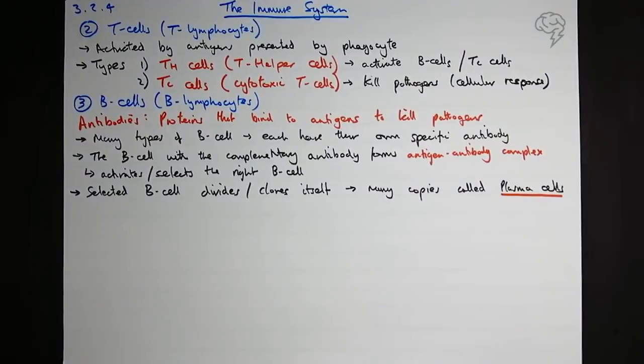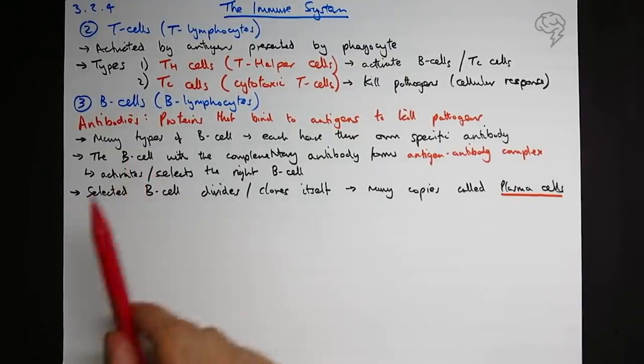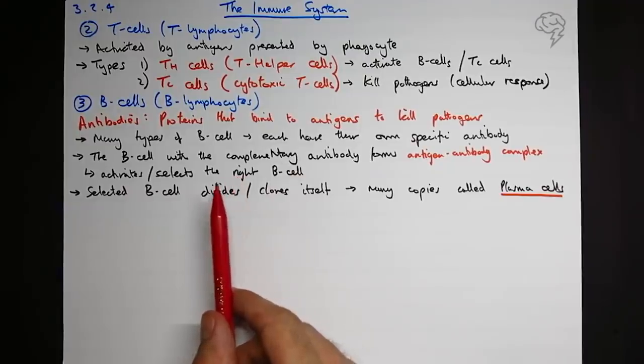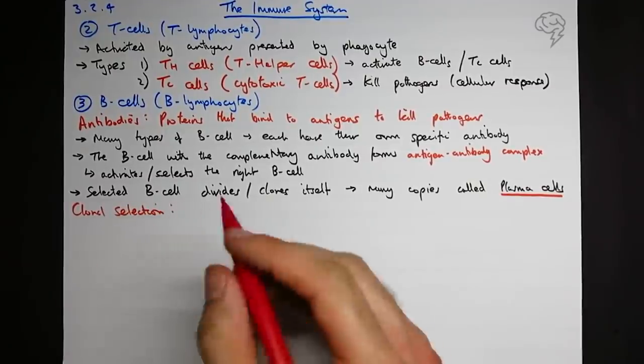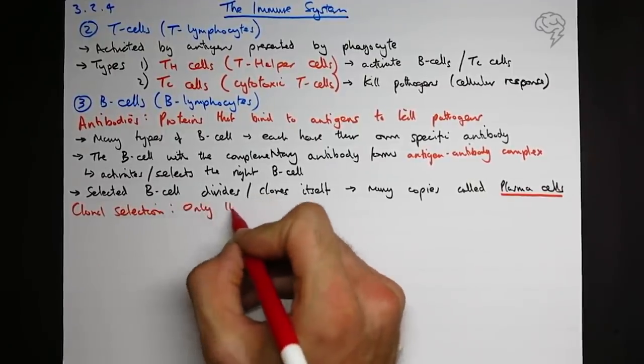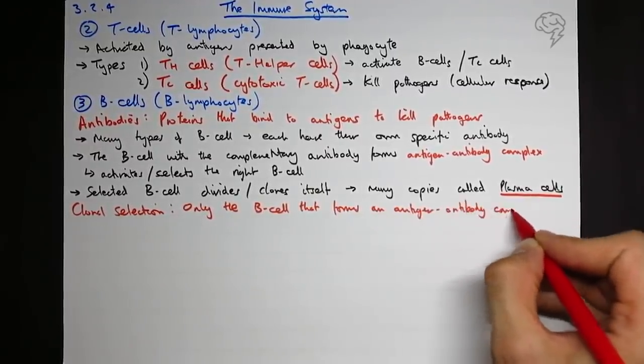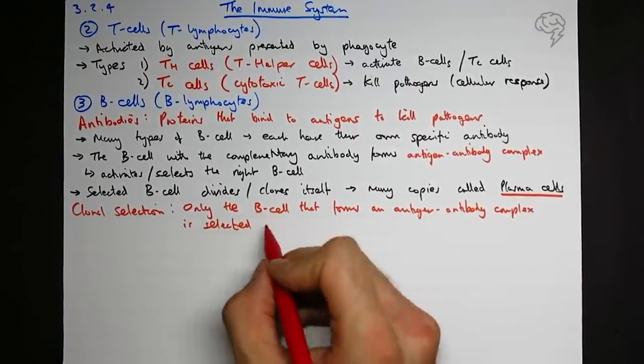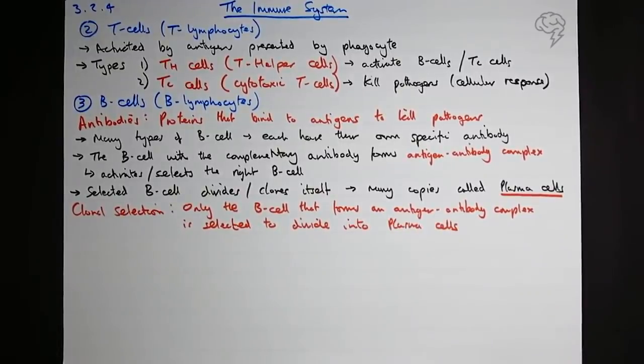Okay, so what is clonal selection? Clonal selection is the selection of the correct, or the B-cell with the complementary antibody, and then it cloning itself. Clonal selection: you can say only the B-cell that forms an antigen-antibody complex is selected to divide into plasma cells. Okay, so that's my definition of clonal selection.